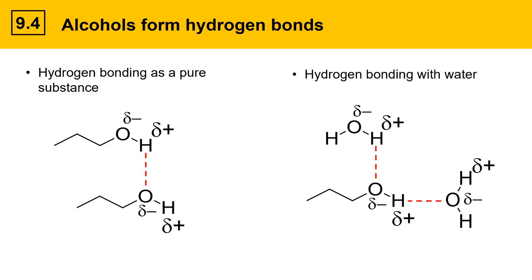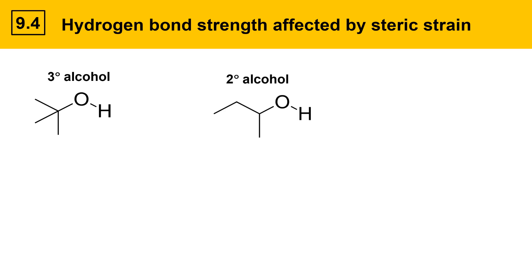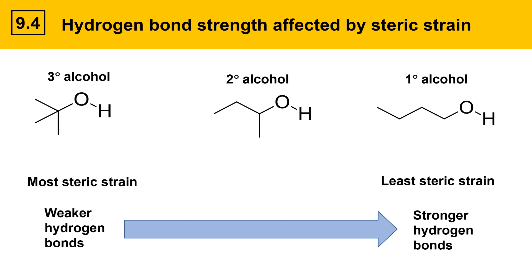Hydrogen bonding is important in alcohols. Hydrogen bond strength is affected by steric strain. We'll show an example of a tertiary alcohol, a secondary alcohol, and a primary alcohol — these have differing amounts of steric strain. The most sterically strained is the tertiary alcohol; it's just difficult for two of these molecules to get together and form a hydrogen bond. It's a bit easier in a secondary alcohol, and with primary alcohols it's the easiest, as they have the least steric strain. The strengths of hydrogen bonds correlate with the amount of steric strain.